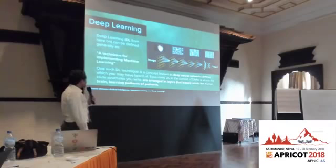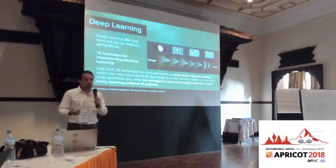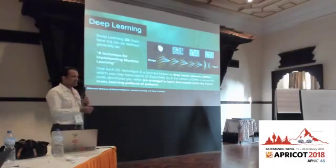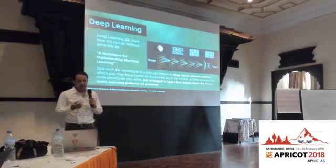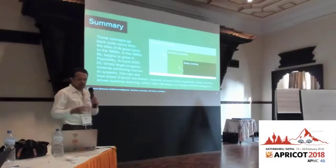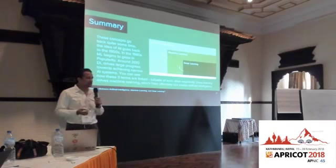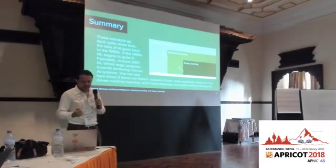Deep learning is a technique for implementing machine learning — it's one level deeper, the actual algorithm itself. Deep neural networks are very loosely modeled on how we believe the human brain works, learning patterns of patterns using deep structures. In summary, AI, ML, and deep learning are interlinked terms that build upon each other, going back to the 1950s. It's only now that we can use these in real-world situations due to increases in processing power and memory.